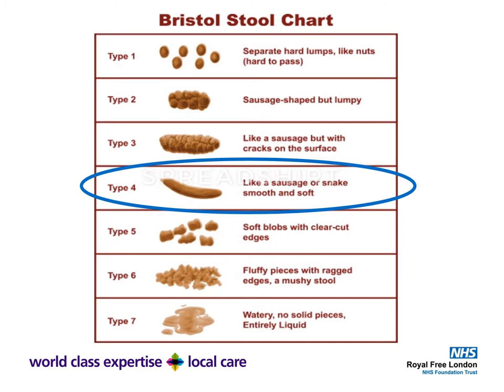Looking at the Bristol Stool Chart, type 4 stool is the ideal. Type 1 represents very constipated, hard, separate lumps. At the other end, type 6 and 7 are seen in infective diarrhea — such as cholera, shigella, campylobacter, and C. diff — which are either fluffy pieces with a ragged edge or entirely liquid. If you see type 7 stool in hospital, you should consider whether the patient has C. difficile.